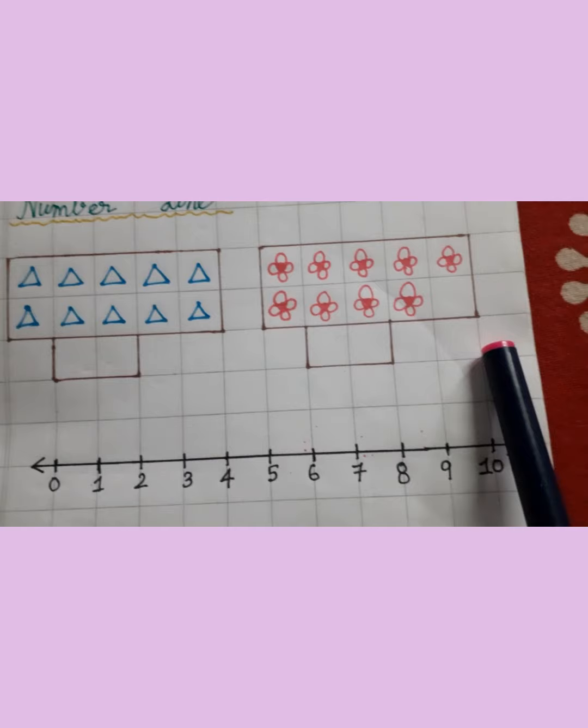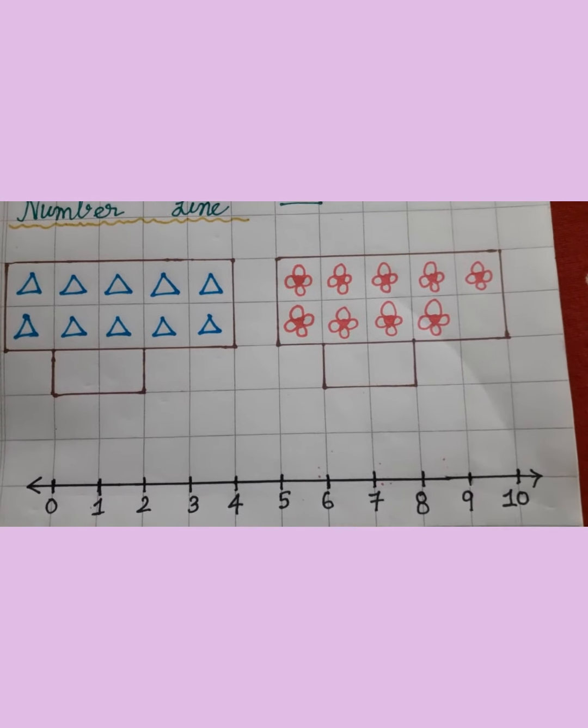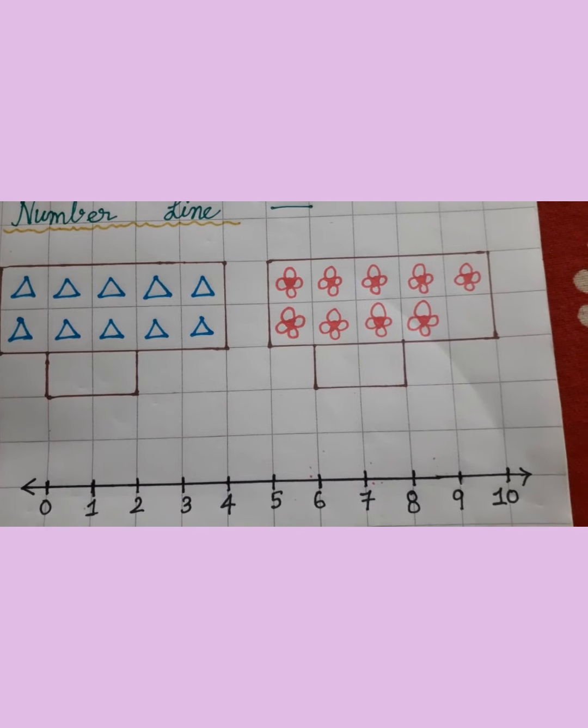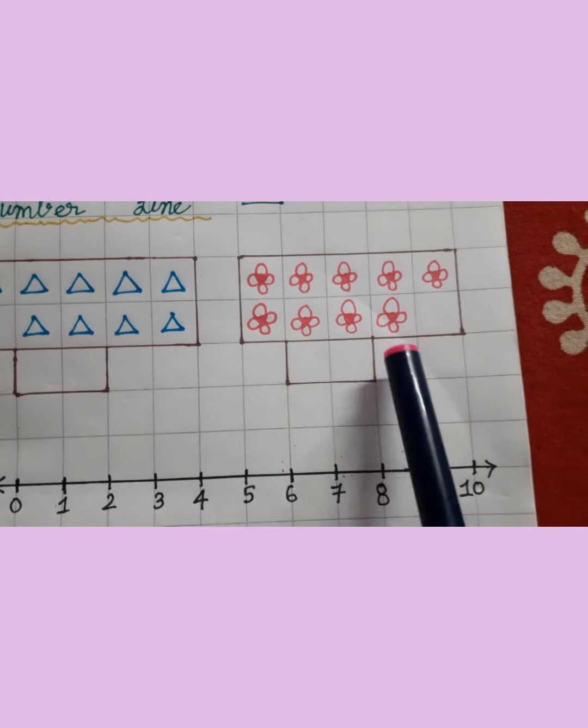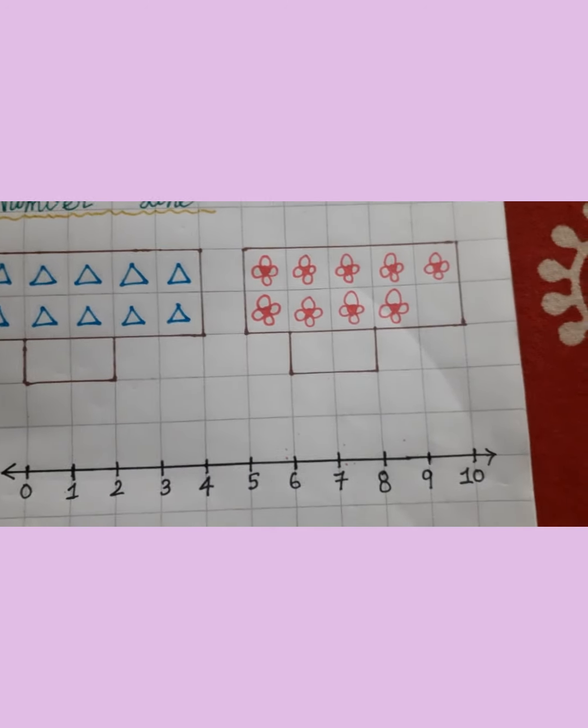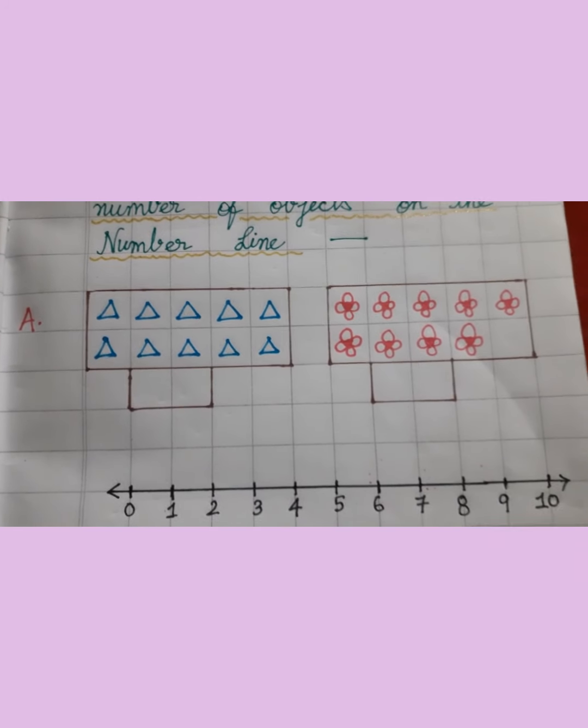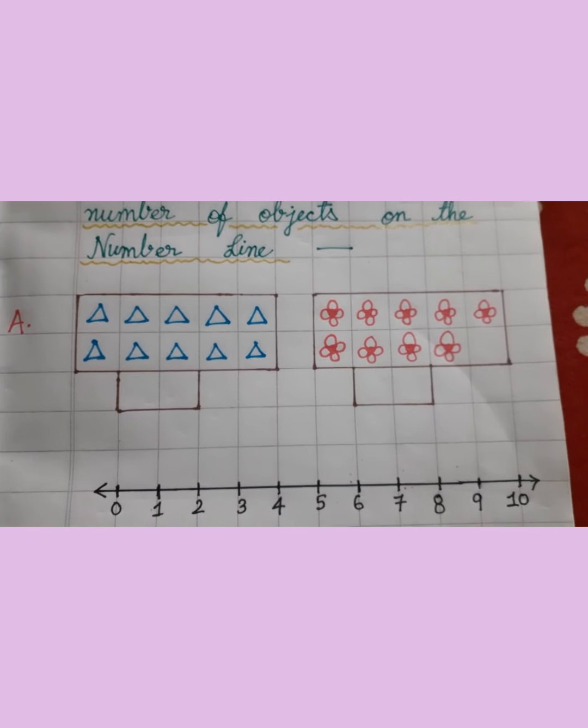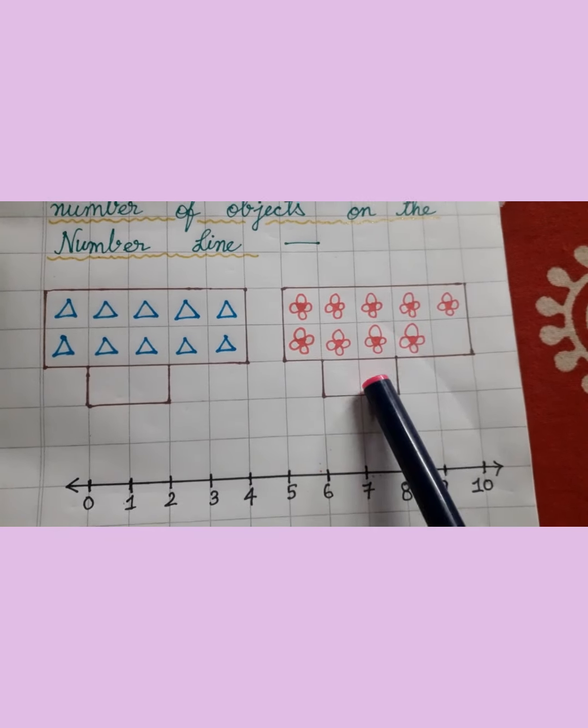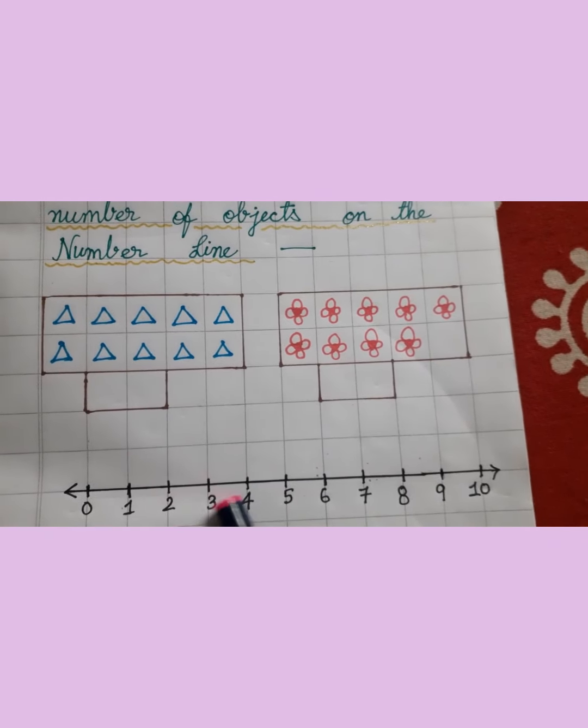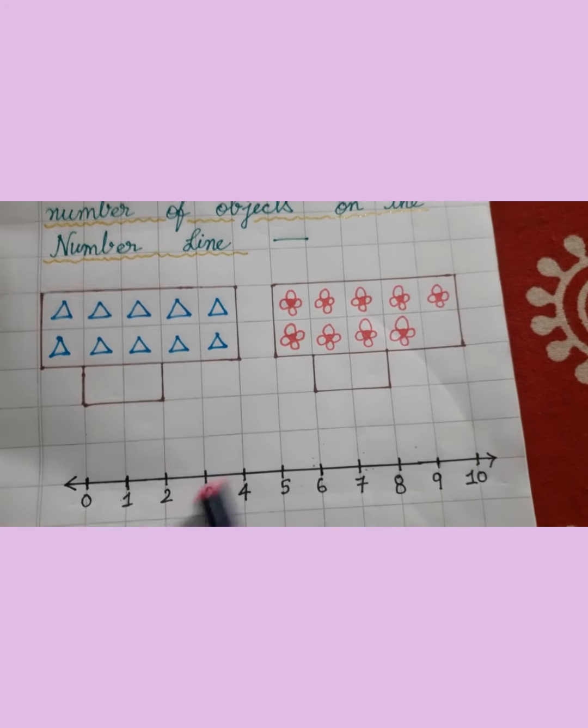And how many flowers are here? Tell me, kids. Please count. Right, we have nine flowers. So you will write nine here. Then, with the help of your scale—I am saying it again and again, use scale—you will join this number, whatever you write here, on the number line.